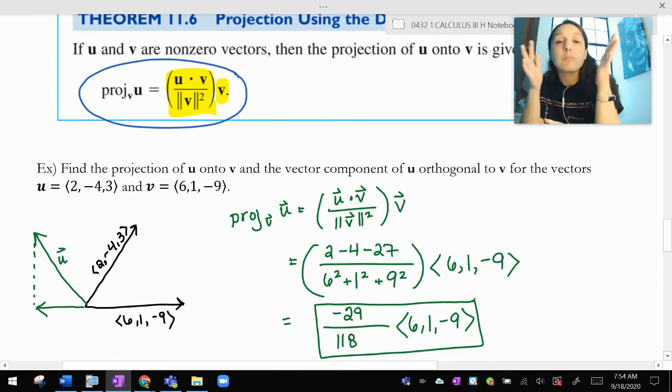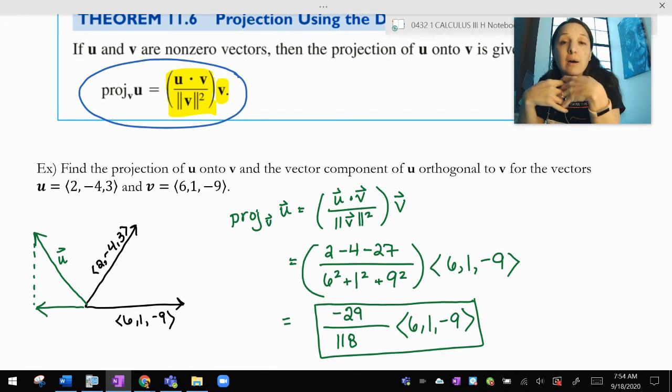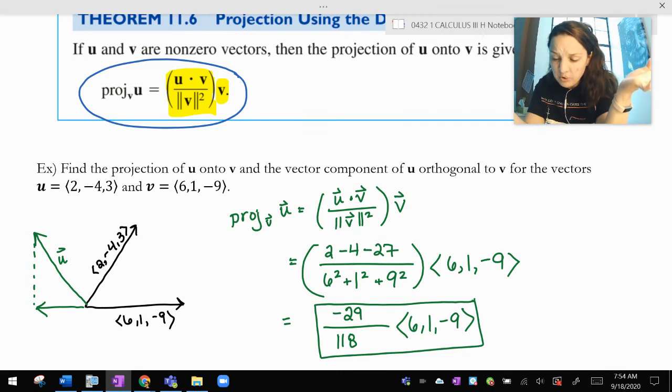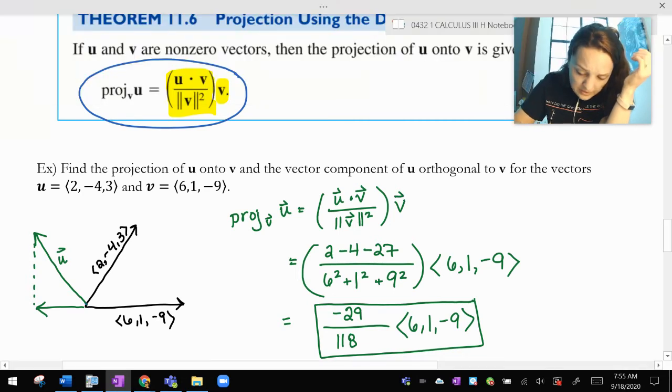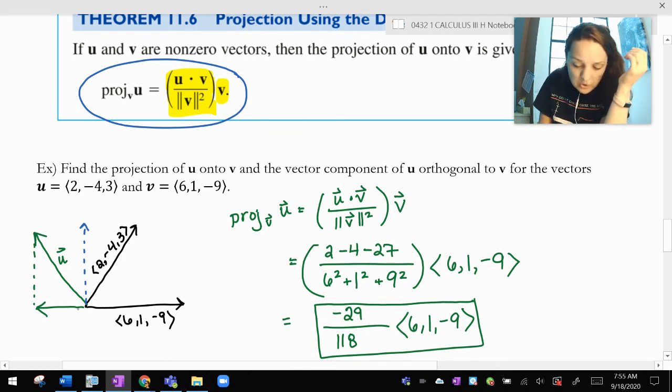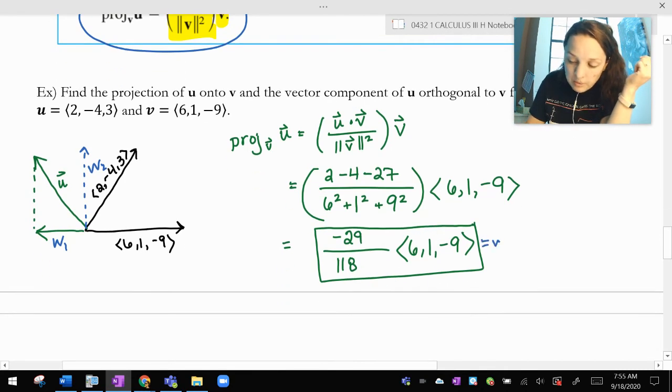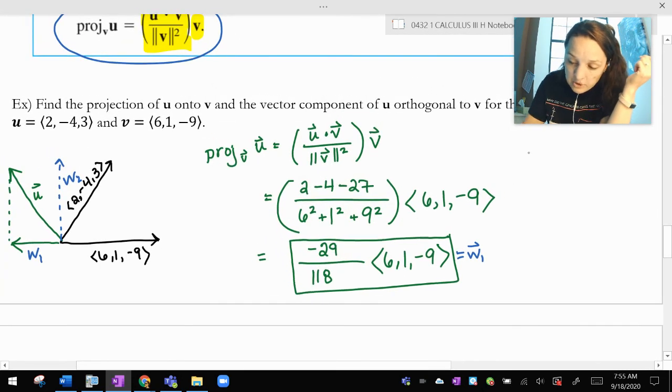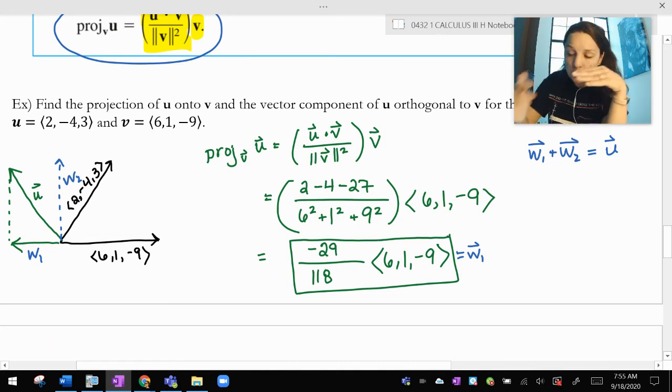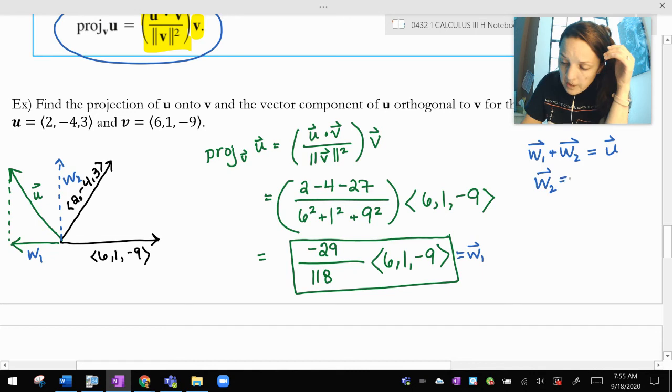Another way to think about projections, the projection of u onto v is the shadow that you would make on vector v. So, there's the projection of u onto v. And then, it says find the vector component of u orthogonal to v for the vectors u and v. So, really that orthogonal component is this vector up here where this blue dotted vector added to this green vector equals u. And in your book, they call this w2 and this w1. I just created w1 and then based on the picture, w1 plus w2 equals u. So, if I want to find w2 now, it would be u minus w1, which is u minus the projection.